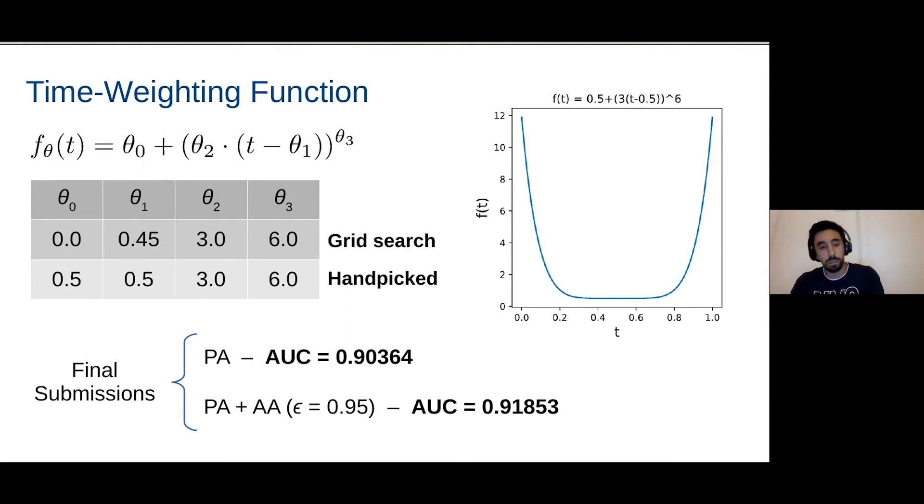And then in our final submissions, we simply went back to the methods we had previously defined and we recomputed them, but now using the time-weighted adjacency matrix instead of the simple adjacency matrix. And for just the preferential attachment score, we got a small improvement, and then combining again the preferential attachment with the Adamic-Adar index with a slight change in the epsilon value, we got our best submission, which had a 0.918.